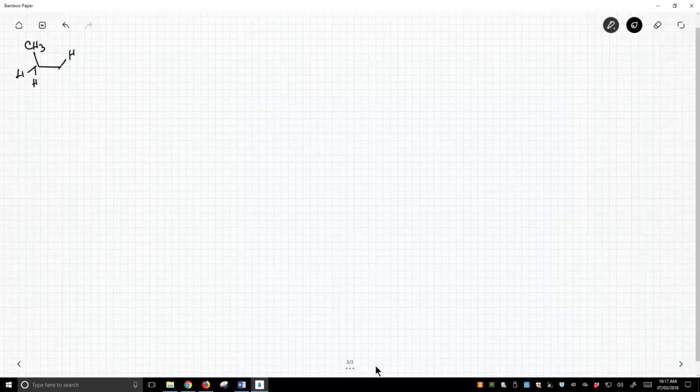So we've shown all these Newman projections for ethane, so now we can just do propane. It will be trivially simple because all we'll do is swap out one of our hydrogens with a methyl group.